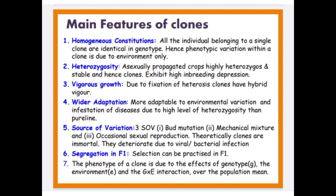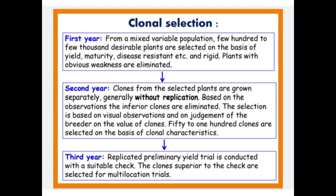Sources of variation include bud mutation, mechanical mixture, and occasional sexual reproduction. Theoretically, clones are immortal but they deteriorate due to viral and bacterial infection. 6. Segregation in F1 — selection can be practiced in F1. 7. The phenotype of a clone is due to the effect of genotype, environment, and genotype-by-environment interaction over the population mean.